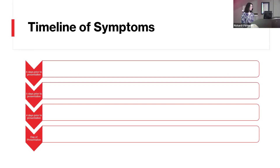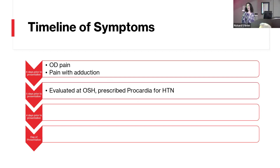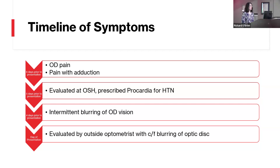On the general timeline of her symptoms: six days prior to presentation, she developed pain behind her right eye, and later that same day noted pain particularly with adduction of that eye. The next day, she was evaluated at an outside hospital and told her symptoms were due to migraine; she was also found to have hypertension and prescribed Procardia. Four days prior to presentation at Duke, she developed intermittent blurring of vision in her right eye. On the day of presentation, an outside optometrist noted potential blurring of the optic disc and sent her to the ED.